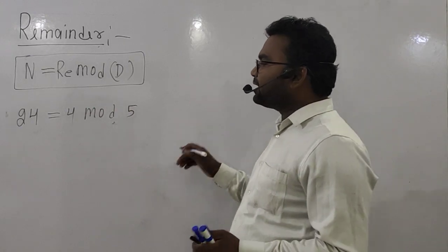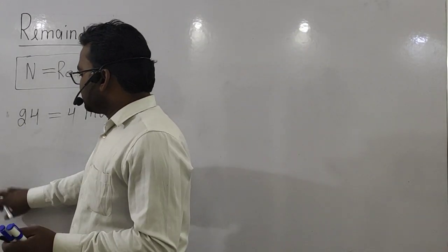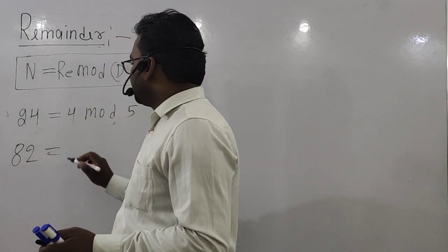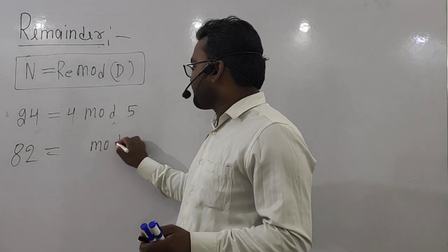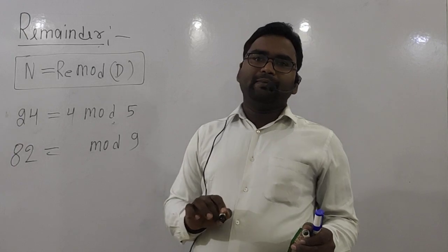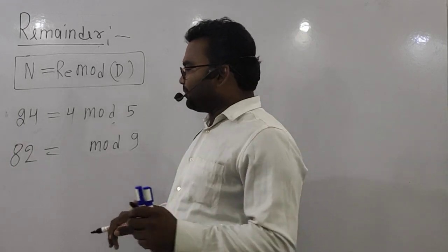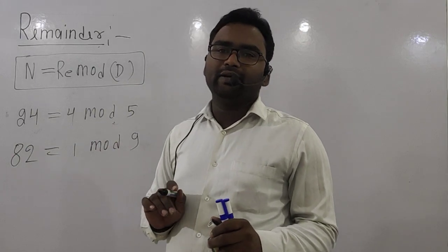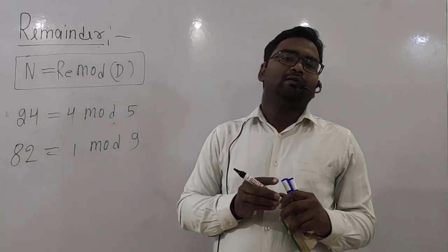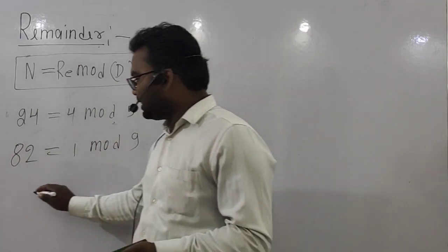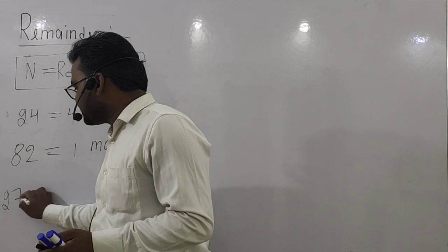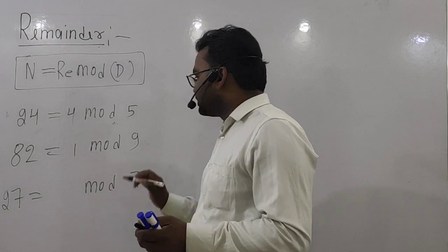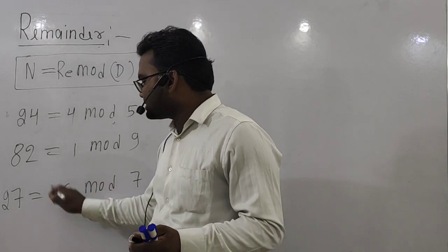Suppose we take the number 82, divided by 9. If we divide 82 by 9, the remainder is 1. Another example: suppose we take the number 27, divided by 7. Here the remainder is 6.